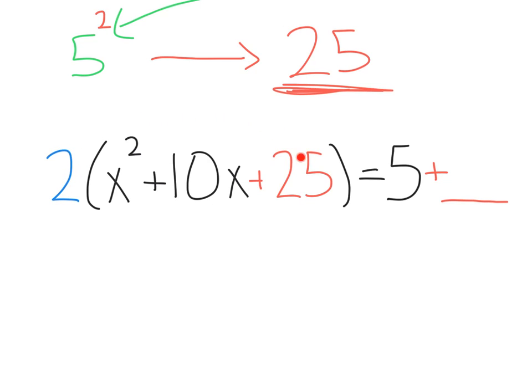So, if we distributed this 2 to the 25, we can see that we actually added 50 to the left-hand side. So, what we're going to do is add 50 to the right-hand side of the equation to keep it balanced.